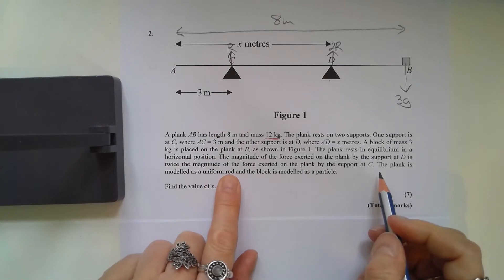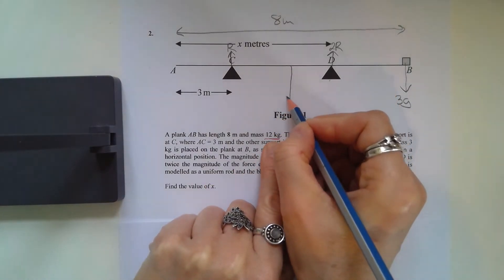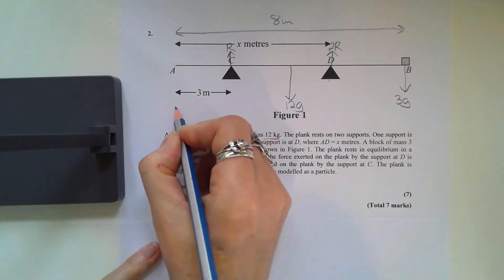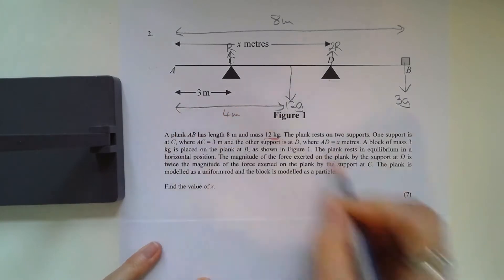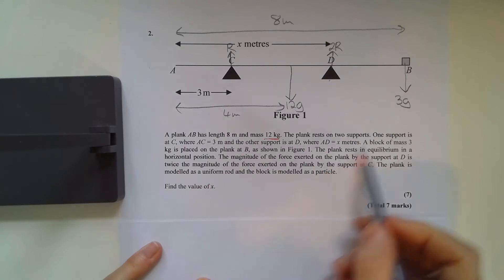The plank is modeled as a uniform rod, so there we have it. Now we know that the weight acts in the center, so 12g, and that's halfway along the rod, so 4 meters. And the block is modeled as a particle.